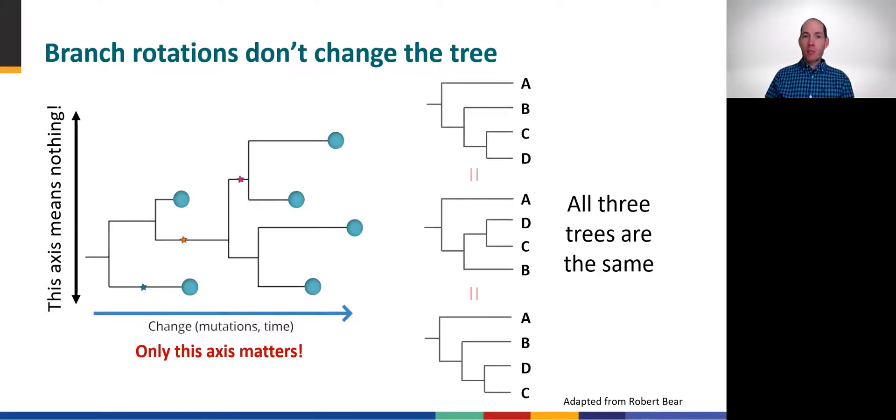Importantly, this means that branch rotations at any of the internal nodes are also meaningless, because it doesn't matter which isolate leaf node is listed above or below the others. Just because two nodes or isolates are written next to each other on the vertical axis does not indicate that they are meaningfully related. These three trees on the right are all identical, even though we can change the order of the leaf node labels by rotating branches around the internal nodes. In all three trees, isolate D is most similar to isolate C, and they share a common ancestor.